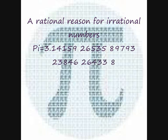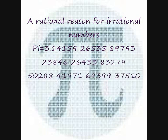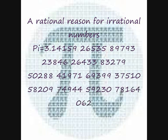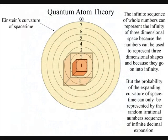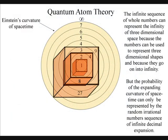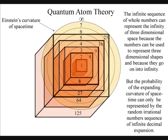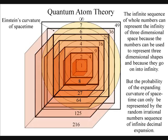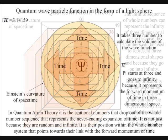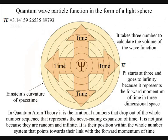This video explains a logical and scientific reason for the irrational number sequence that never ends and never forms a regular pattern. It is easy to see that the infinite sequence of whole numbers can represent the infinity of three-dimensional space, because the numbers can be used to represent three-dimensional shapes and go on into infinity. But in a new theory called Quantum Atom Theory, it is the irrational numbers that drop out of the whole number sequence that represent the never-ending expansion of time.